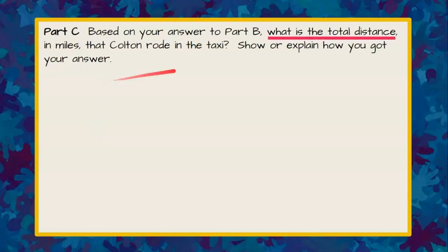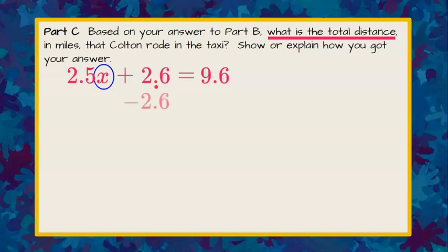Welcome back. So we're trying to find the total distance that he went, so we want to know what that X was. We'll bring forward our equation that we wrote in the previous part: 2.5X plus 2.6 equals 9.6. We want to get X all alone. To do that I need to get this variable term alone and do the inverse of add 2.6 which is to subtract 2.6 from each side. This gives me my zero pair so I'm going to bring down my 2.5X and that will equal 9.6 subtract 2.6 which is seven.